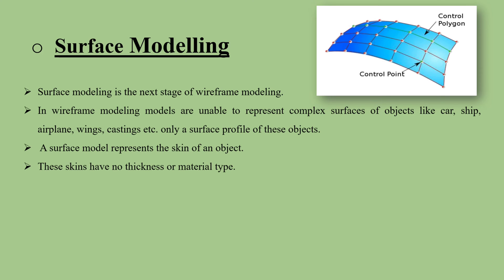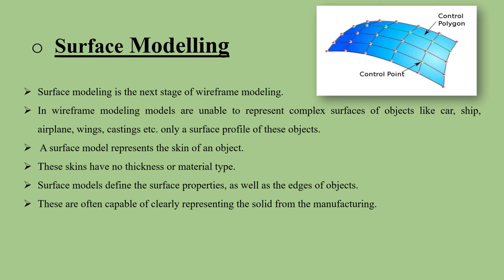A surface model represents the skin of an object. These skins have no thickness or material type. Surface models define the surface properties as well as the edges of objects. These are often capable of clearly representing the solid from manufacturing.